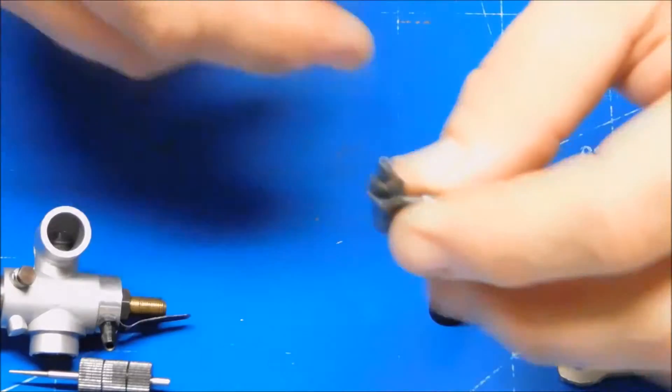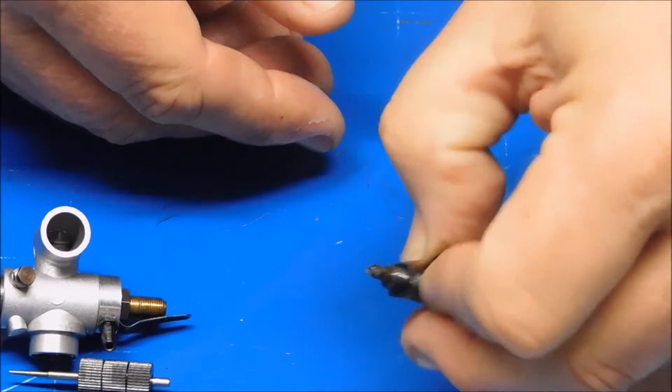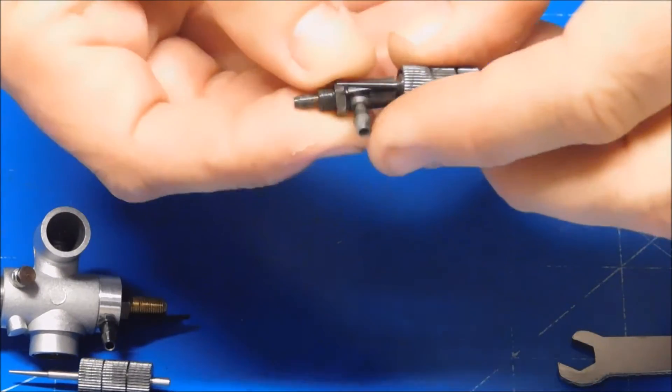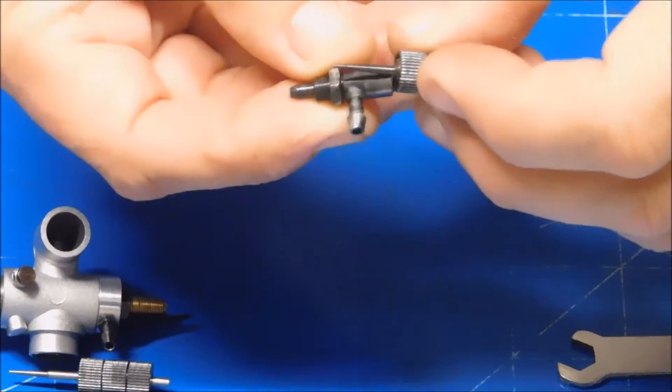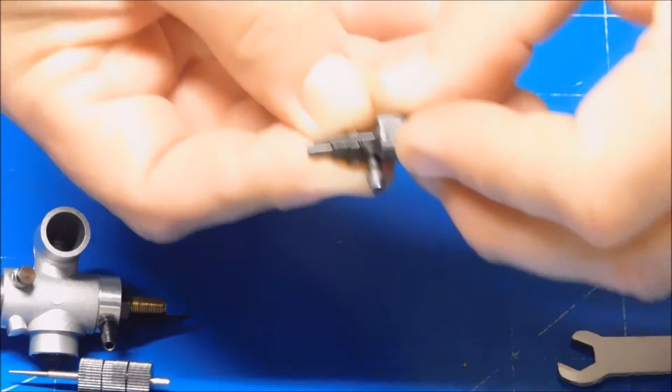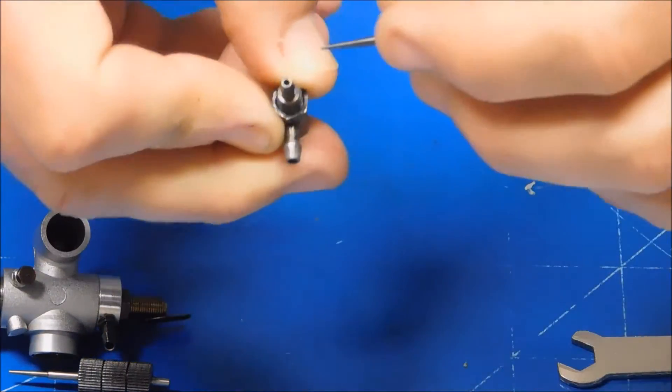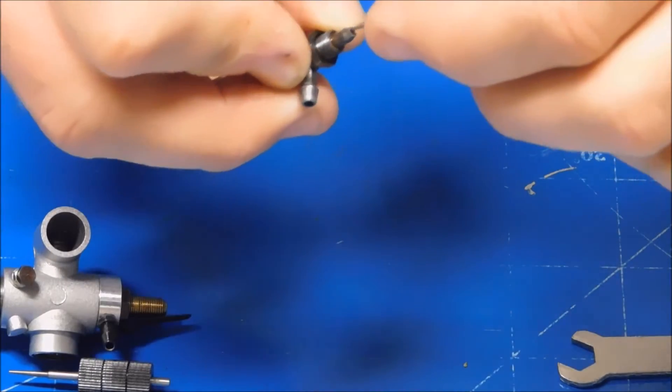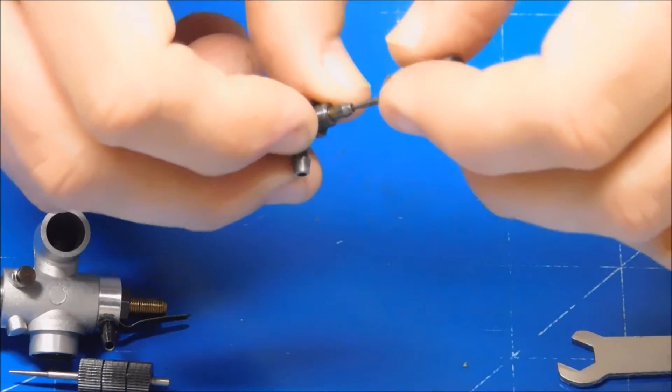So this is what the needle looks like, or the needle assembly. The issue that this particular engine has is that when this needle is fully threaded in here, it never actually goes far enough to actually close that orifice completely.